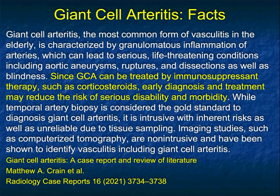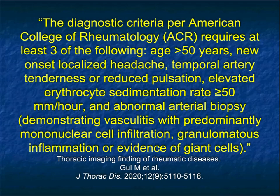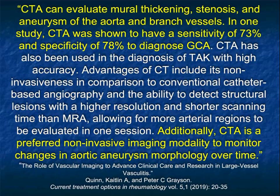Temporal artery biopsy was the gold standard, but imaging can now give similar information, and in older patients you want to do as little as possible while getting the right diagnosis. The American College of Rheumatology requires at least three of the following: age over 50, new onset localized headache, temporal artery tenderness or reduced pulsation, elevated ESR over 50 mm/hour, and abnormal arterial biopsy — so you don't necessarily need a biopsy. CTA can evaluate mural thickening, stenosis, and aneurysms of the aorta and its branch vessels, with sensitivity over 73% and specificity of 78% for diagnosing giant cell arteritis.